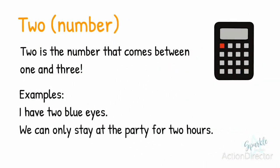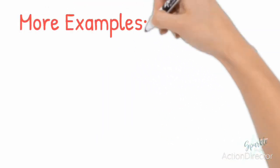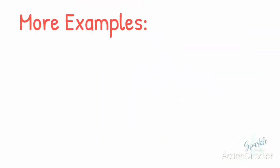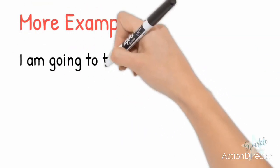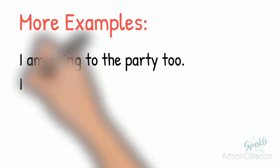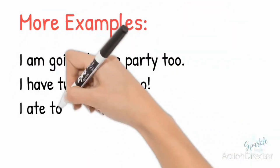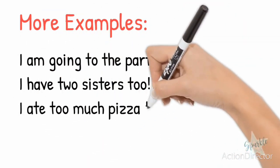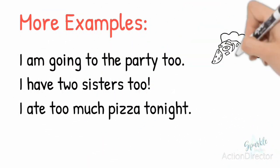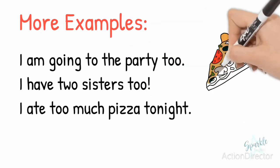Now let's look at a few examples combining these words: I am going to the party too. I have two sisters too. I ate too much pizza tonight.